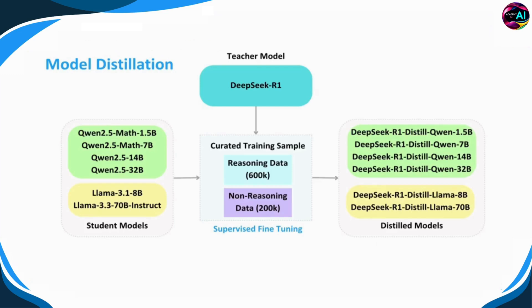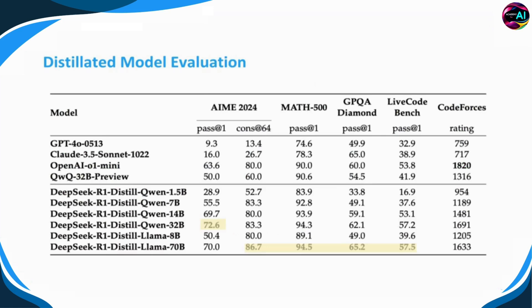Finally, let's discuss the model distillation process. In this process, DeepSeek R1 serves as the teacher model, providing carefully curated training data. Using this training data, DeepSeek distills knowledge into smaller and more efficient models. Student models like Qwen and LLaMA learn from this data during the supervised fine-tuning process, ultimately resulting in distilled models that excel in math, coding, and efficiency — showing that size isn't the only factor that matters. Here's an evaluation of the distilled DeepSeek R1 models. We can clearly see that DeepSeek LLaMA 70 billion outperforms competitors in many benchmarks, excelling in both math and coding, proving that DeepSeek's distilled models are smarter, faster, and more efficient.